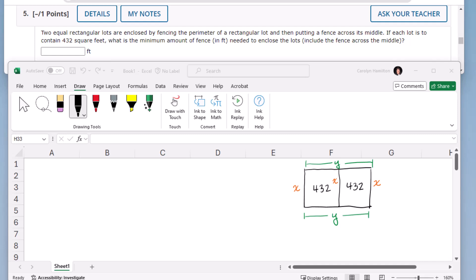We have two equal rectangular lots, each one has 432 square feet, and then they're put side by side so you've got the single fence going across the middle.